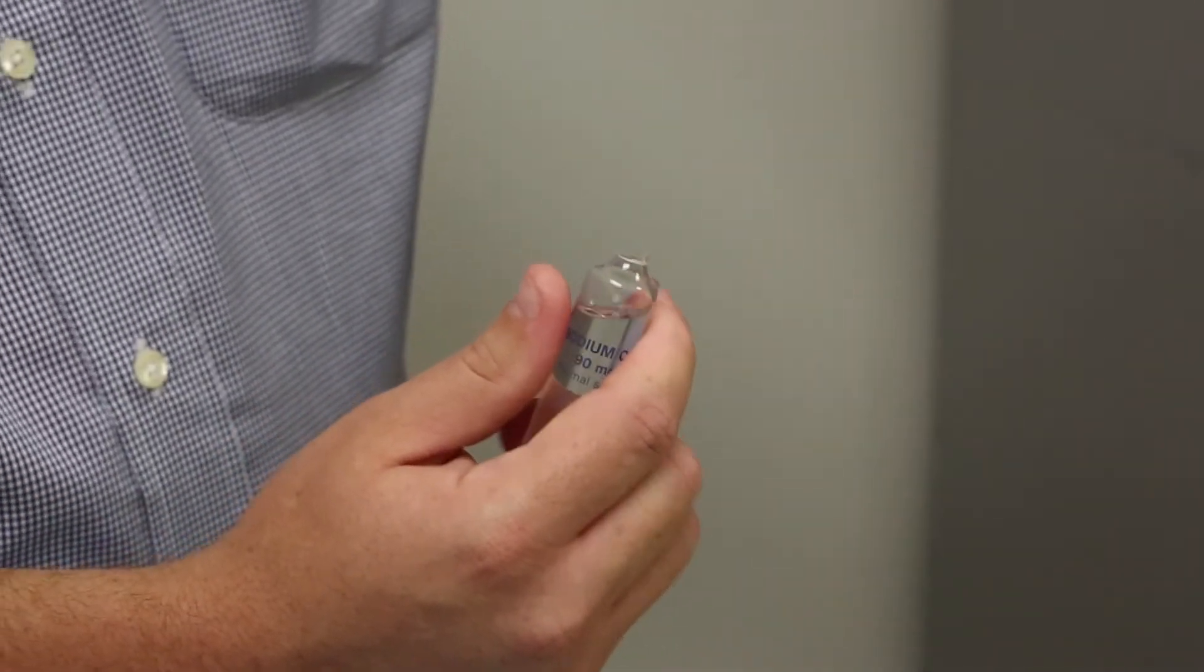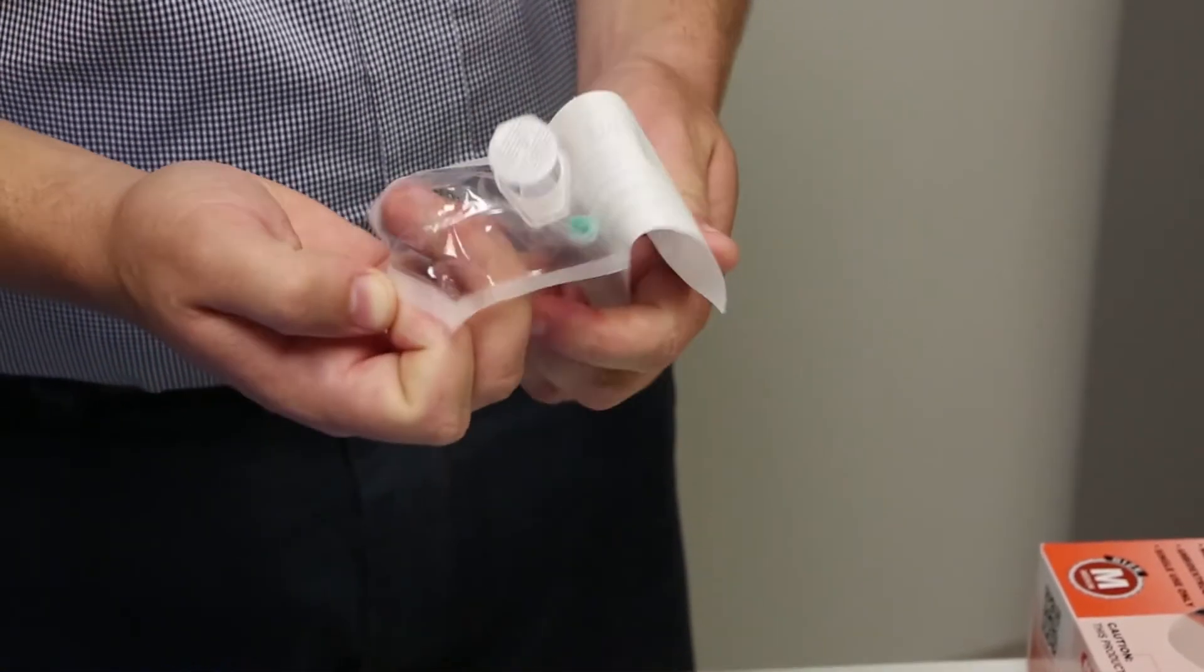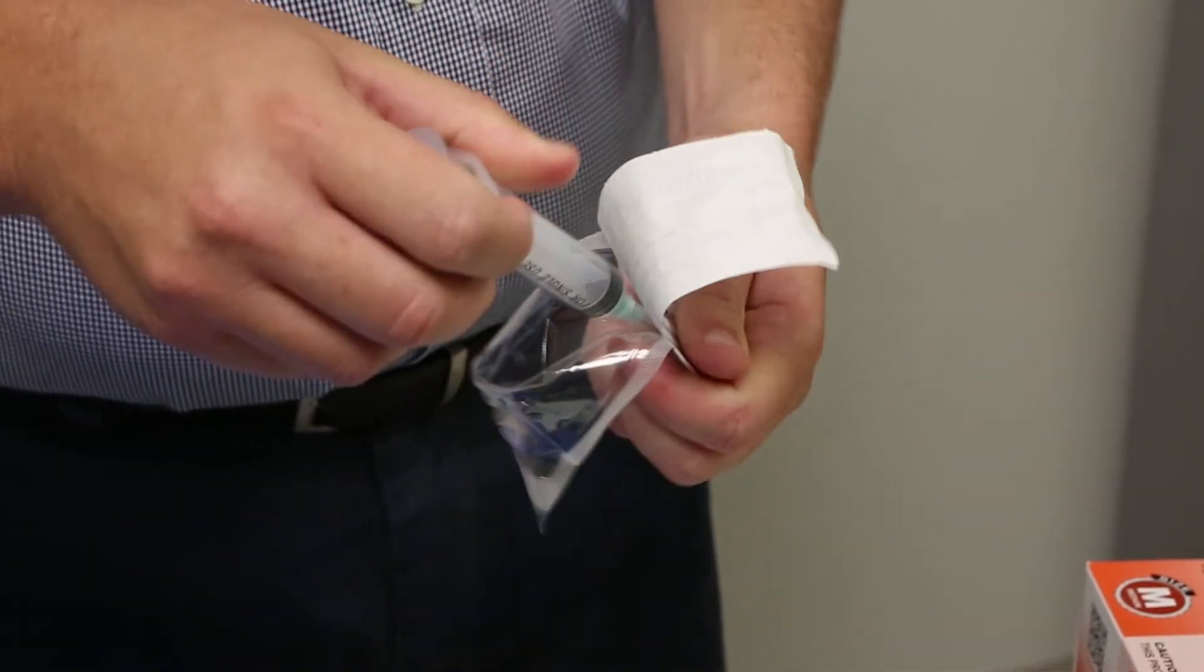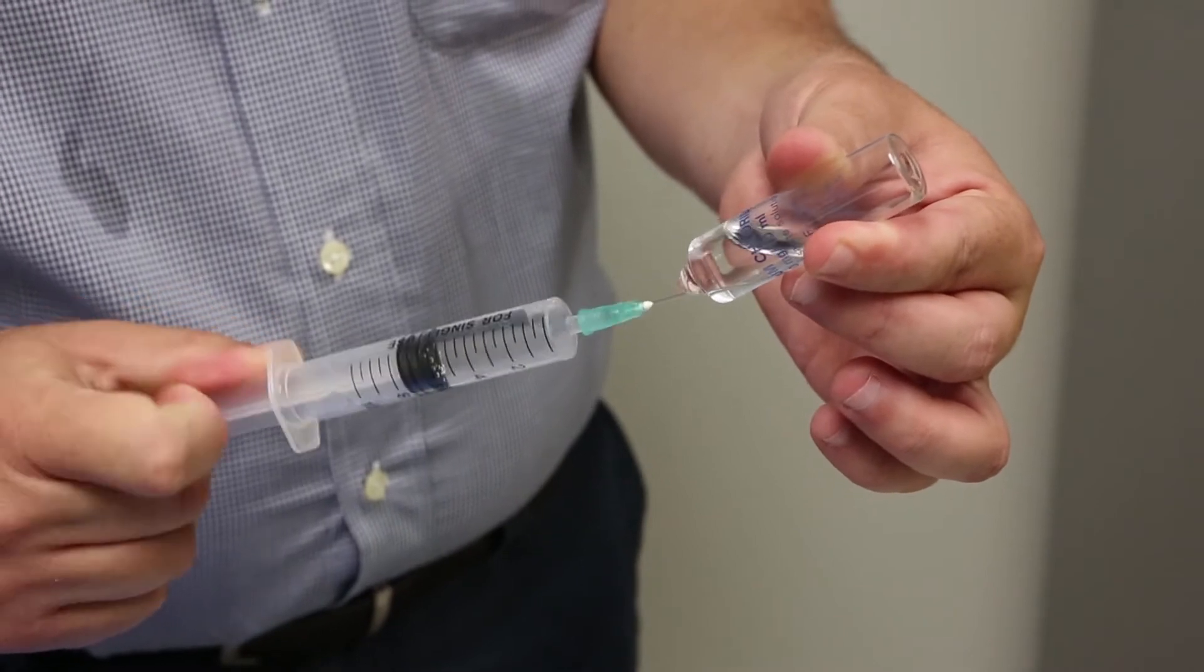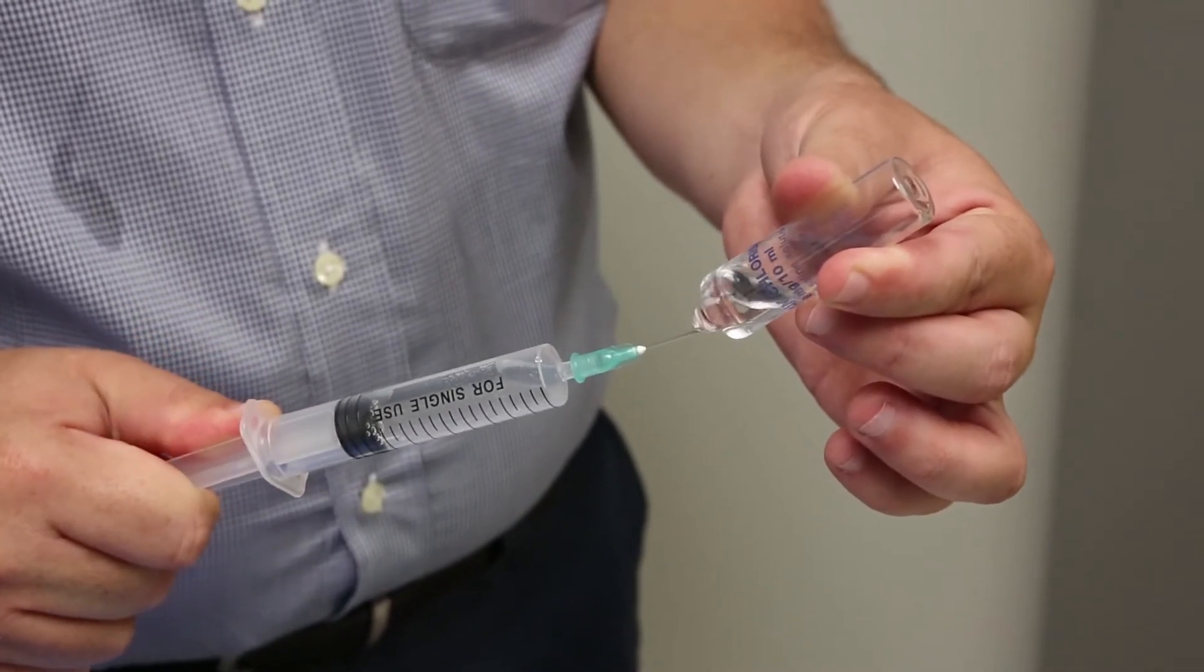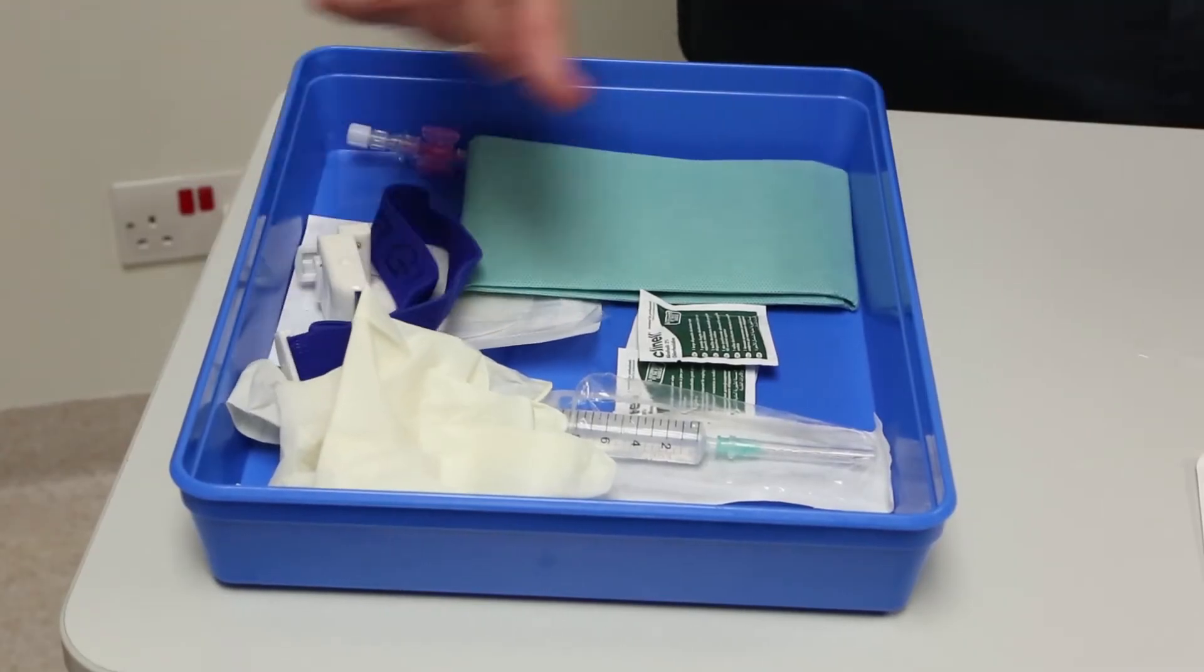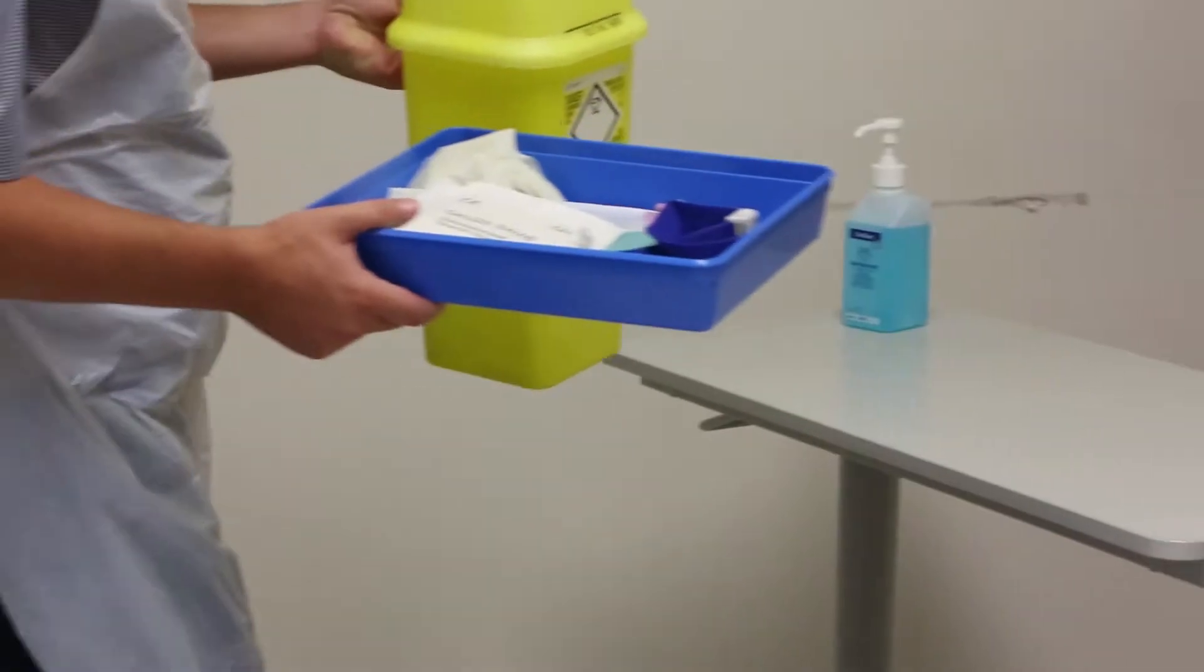Step 6. Draw up the cannula flush using sterile 0.9% saline for intravenous use. If an extension set is to be used, prime with sterile 0.9% saline for intravenous use. Protect the key parts that are not in use by using sterile caps or stoppers. Proceed to the patient.